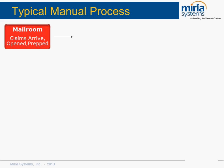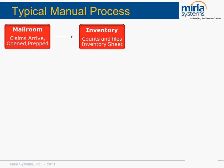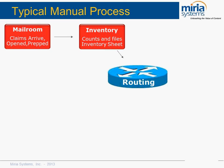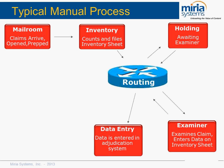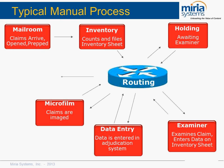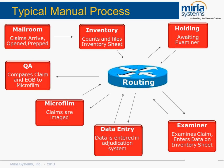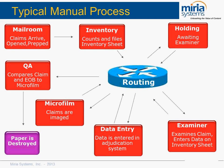Let's take a look at the traditional manual process. It's very involved, with different steps. It comes in through the mailroom for inventory — you count the sheets, put in separators, and it may be routed awaiting the examiner. It's a lot of manual processes, including data entry into the adjudication system, possible microfilm, and then you destroy the paper. A lot of manual jumping around with this process, and it's certainly not very efficient.